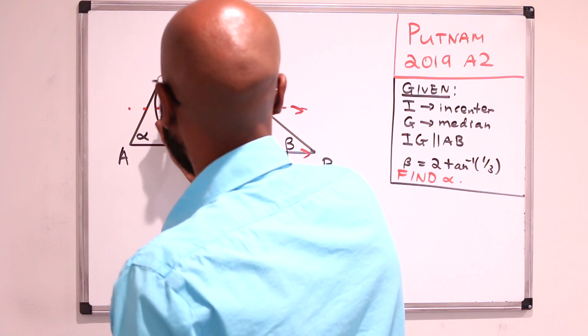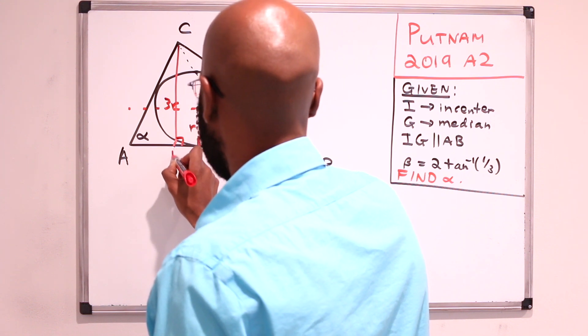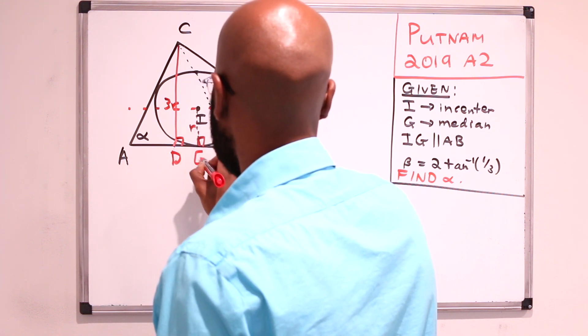So this length here would be 3R, and I'm gonna let this point have a name, maybe call this D and call this E.